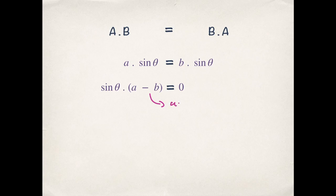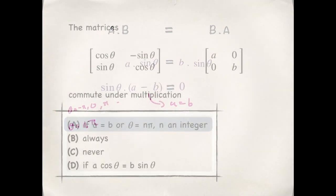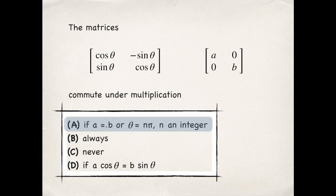So this is true when a equals to b and sin θ is 0 for θ equals to minus π, 0, π and so on. So in general θ equals to integral multiple of π. So the matrices commute under multiplication if a equals to b or θ equals to integral multiple of π.